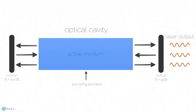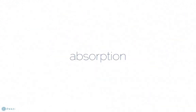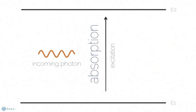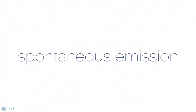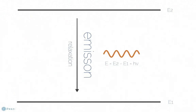Within this active medium, there are three main processes occurring. The first is absorption, in which an incoming photon excites an electron from the lower energy level E1 to the excited state E2 in the two-level system. Once in this excited state, this electron can undergo spontaneous emission when it relaxes from the high energy level E2 to the lower energy level E1.